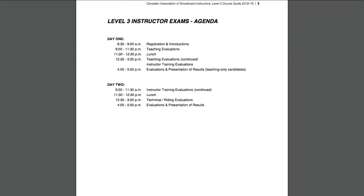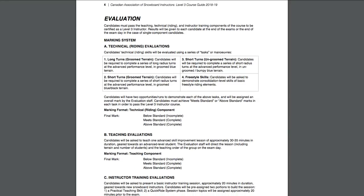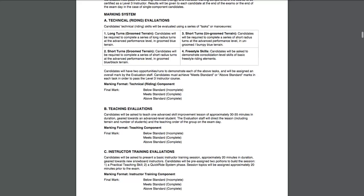The Level 3 exam agenda is a two-day exam where we focus mostly on teaching evaluations on day one, and then on day two we get into instructor training and riding evaluations. Candidates must pass the teaching, riding, and instructor training components to be certified as a Level 3 instructor. Each component is marked on a below, meets, or above standard scale — no number marks. Then there's the teaching evaluation and the instructor training evaluation.